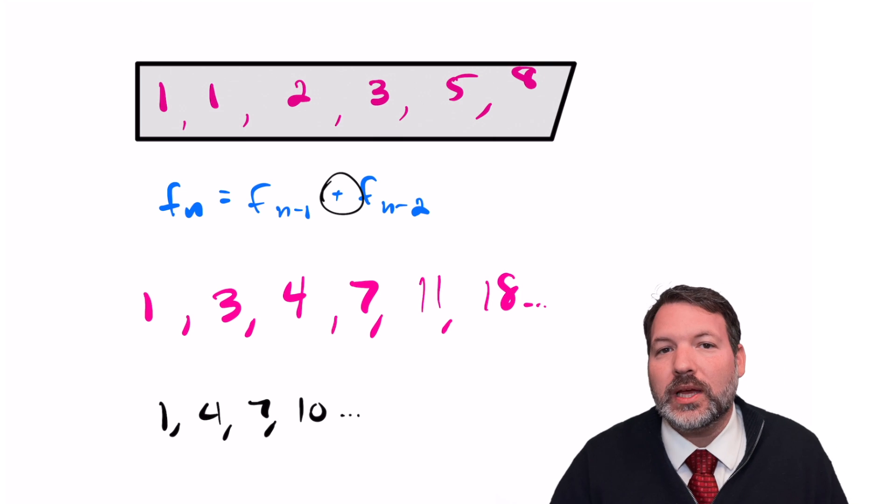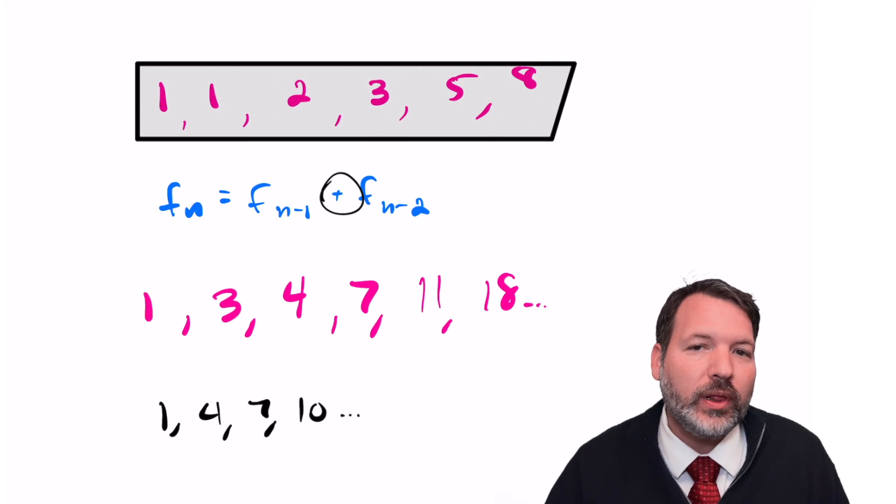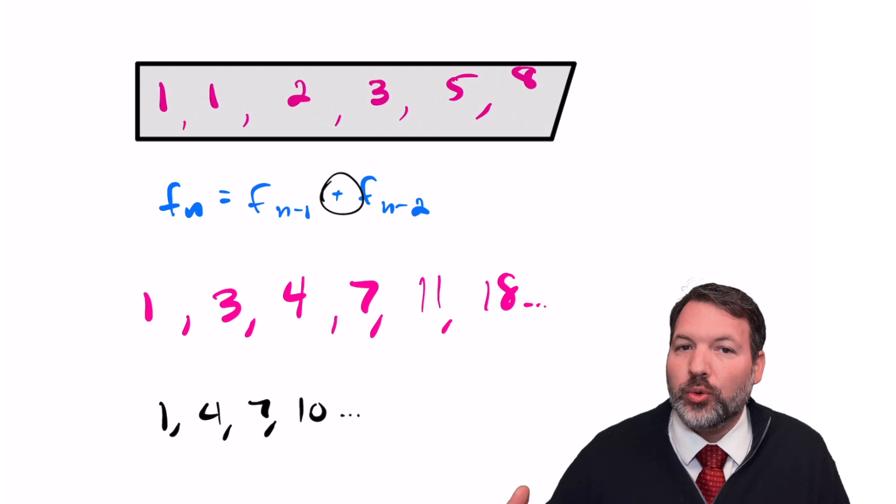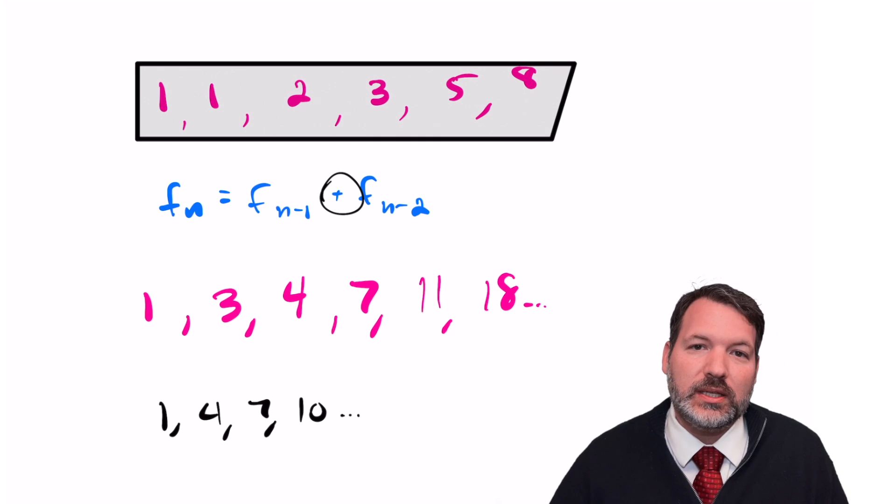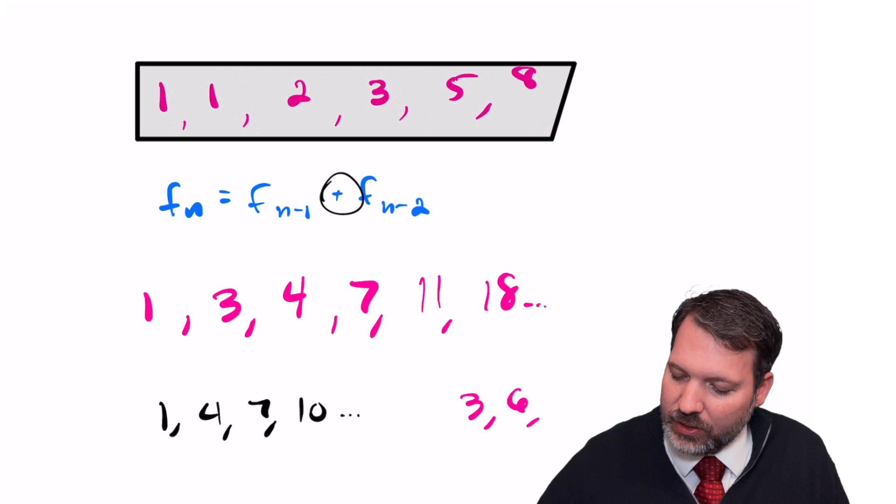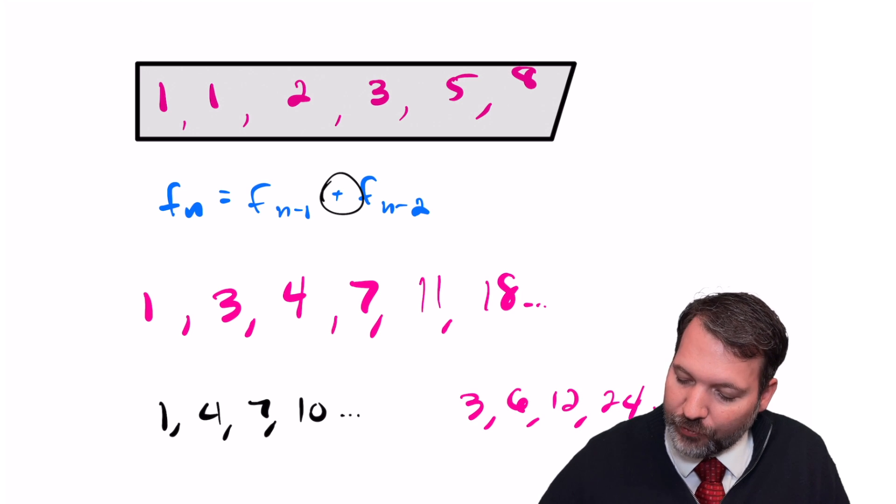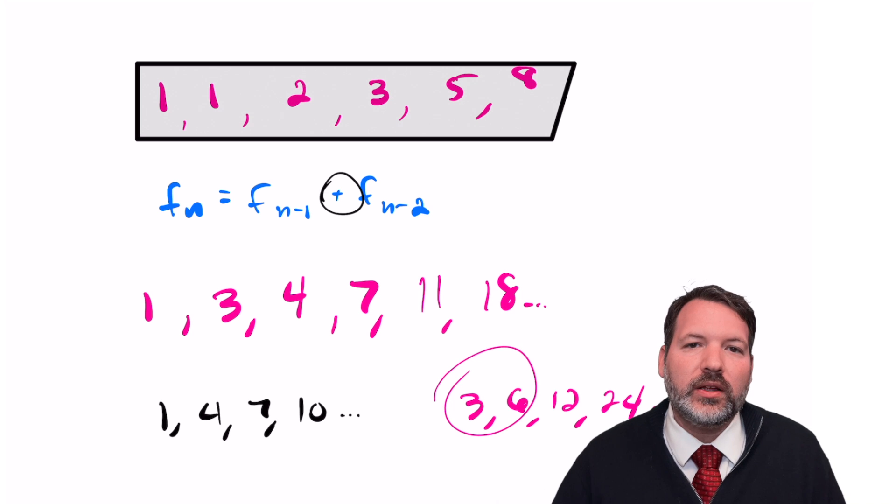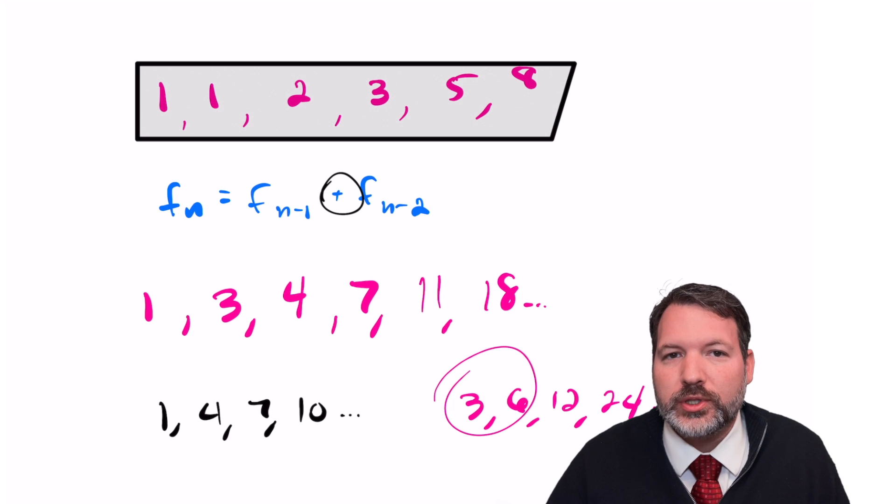In actuality, as we let the terms get larger and larger, they behave more like geometric sequences. Geometric sequences are those where the ratio between terms stays the same. So something like 3, 6, 12, 24 is a geometric sequence, because for any two consecutive terms, the ratio between those terms is the same.